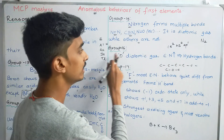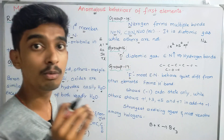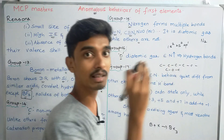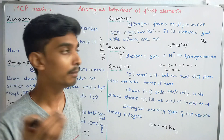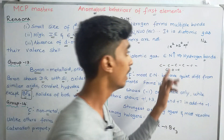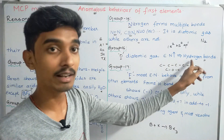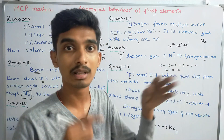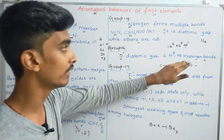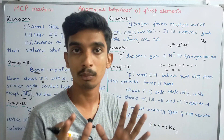Next, Group 16. Oxygen is diatomic gas. Oxygen has high electronegativity and can form hydrogen bonds. This ability to form hydrogen bonds is a distinct and important property that makes Oxygen behave differently from the other Group 16 elements.